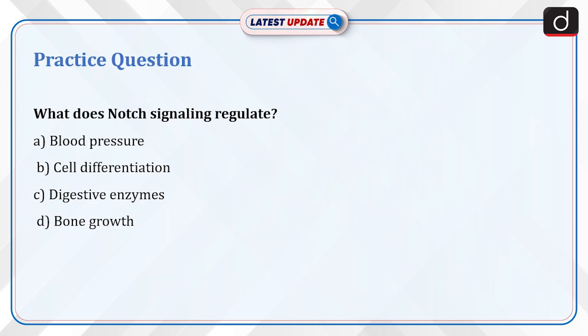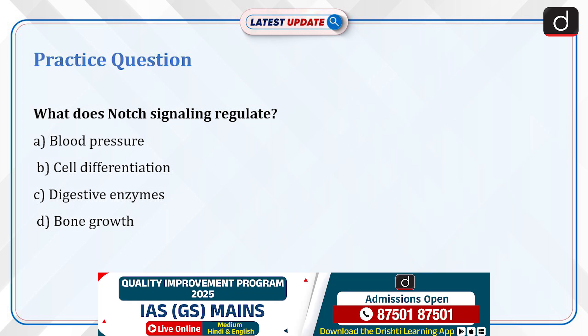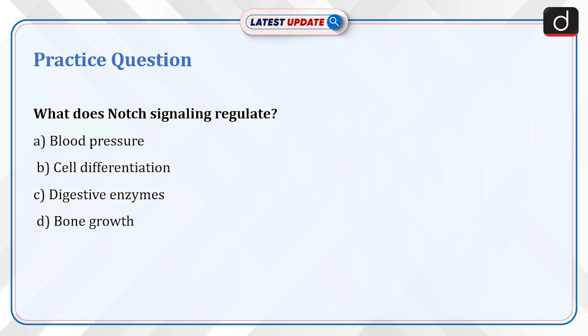Now it's time for a practice question. What does notch signaling regulate? A. Blood pressure. B. Cell differentiation. C. Digestive enzymes. D. Bone growth. Send the answer for this question in the comment section.